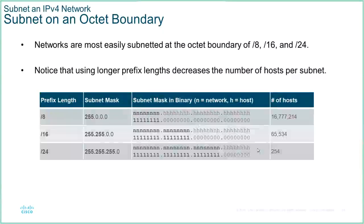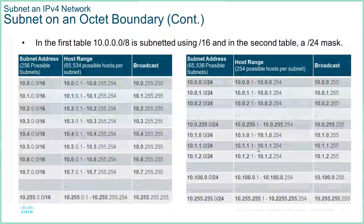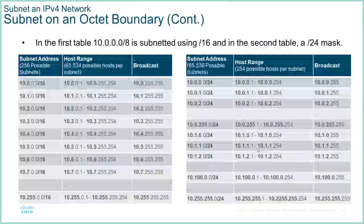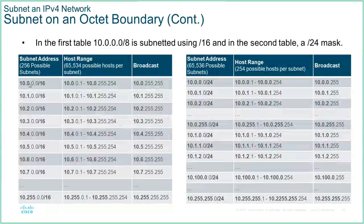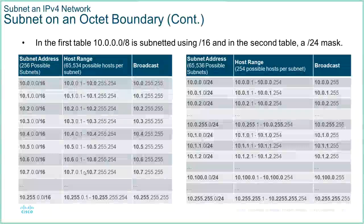One of the simplest ways of subnetting is to divide the network based on the octet boundary — so /8, /16, /24. That's the easiest way of subnetting. We can take a class A network at /8 and break it up into 254 networks, making it a /16 address. Each second octet value — 0, 1, 2, 3, 4, 5, and so on up to 255 — becomes its own network. It's very easy to do, but not the most efficient way of breaking up the network.